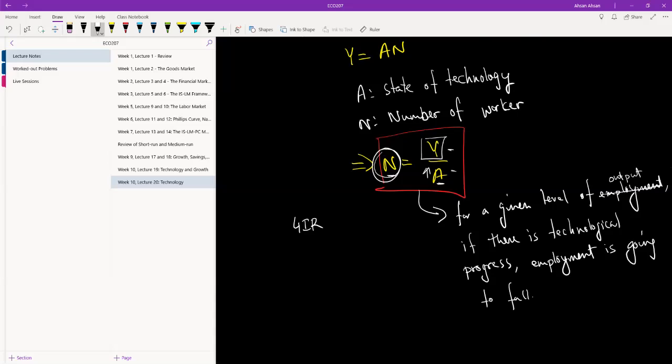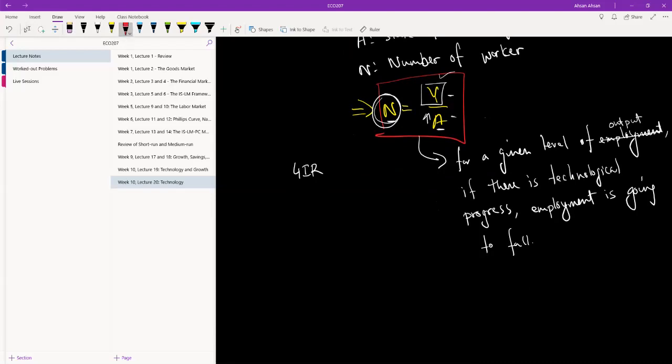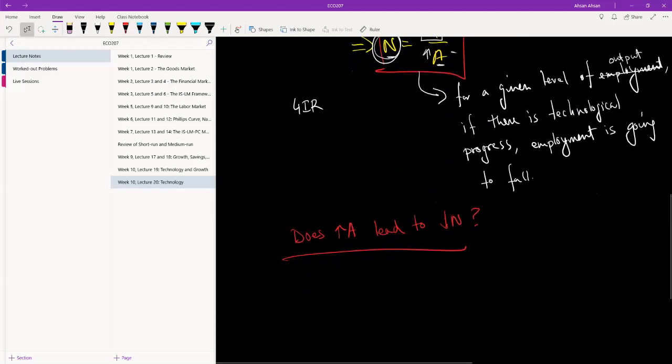This is one of the basic fears of technology. Of course you guys can make the argument that if there is technological advancement, why will Y stay fixed? Why won't Y increase at the same time? It's not a very straightforward argument, so we're going to look into this in more in-depth analysis and try to figure out exactly what happens to employment and output in the short run.